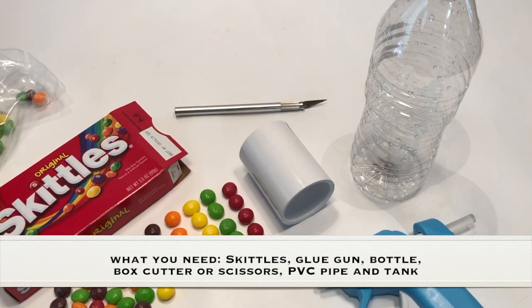As always, adult supervision is required. What you need for this experiment is Skittles, a glue gun, a water bottle, a box cutter or scissors, a PVC pipe, and a tank of water.